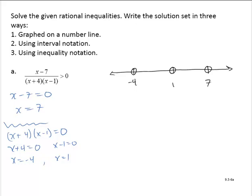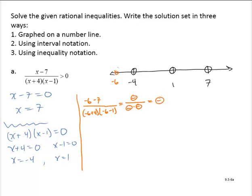Now I will test in each of the intervals. Testing x equals negative 6: I would have negative 6 minus 7 over negative 6 plus 4 times negative 6 minus 1. That gives me a negative over a negative times a negative — three negatives being multiplied and divided — so that result would be negative on the first interval.